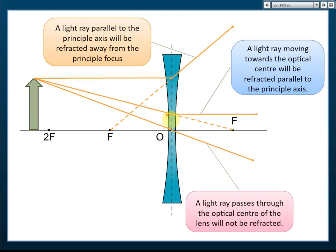After drawing all three lines, you need to extend the refracted rays backwards so they intersect with the other lines. The point of intersection is the position of the image. Since the rays diverge, we extend the lines backwards, and at the point of intersection, that is where the image is formed.